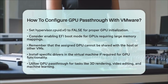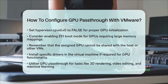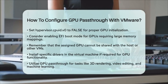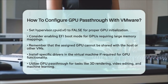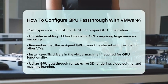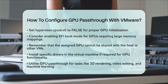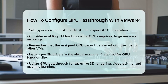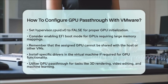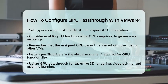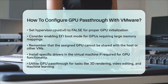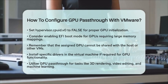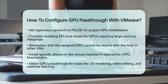By following these steps, you can successfully set up GPU pass-through in VMware ESXi. This will enable your virtual machine to utilize a physical GPU, effectively transforming it into a powerful workstation with dedicated graphics hardware.